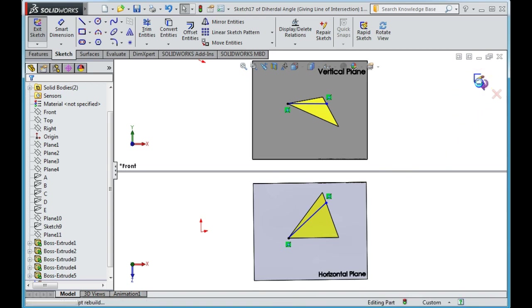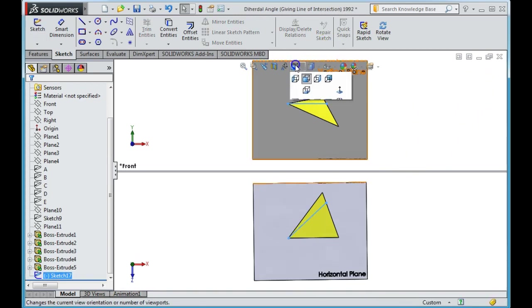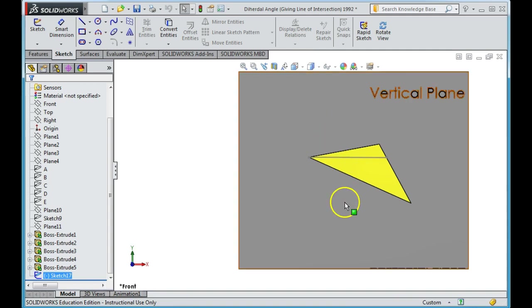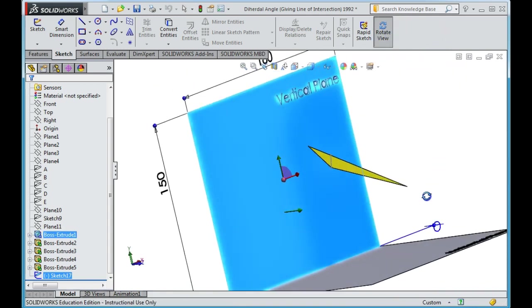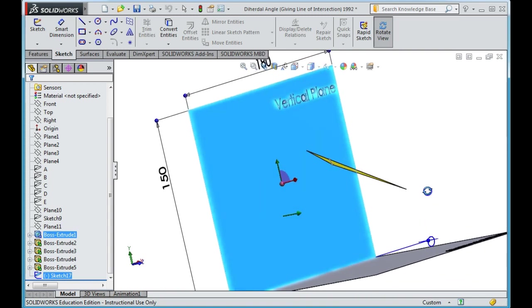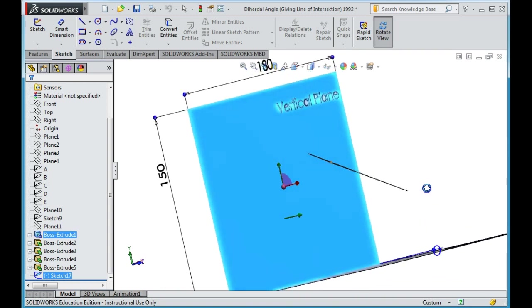Alright so I'm just going to turn this off and just go back to one window view. I now have this line, and as we can see, if I look into that line and make it a point, that's going to give me an edge view.